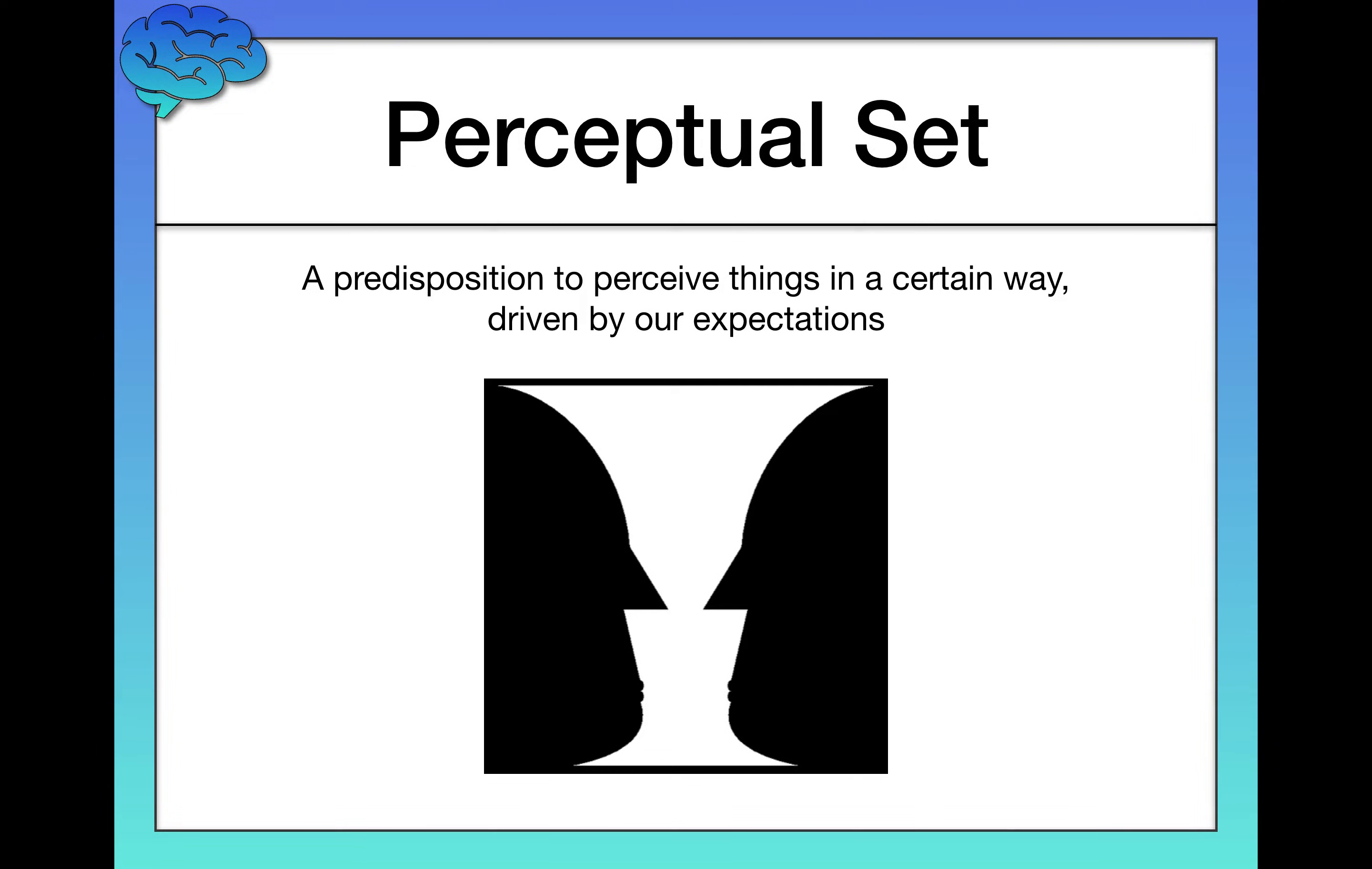If instead I said nice vase with a V, then you would probably see the white vase in the middle and the other two black faces might sort of fade into the background. Then I'm changing your perceptual set.